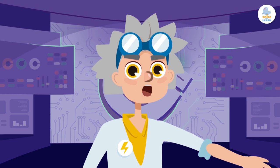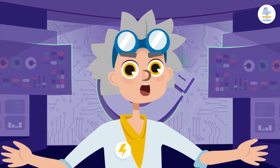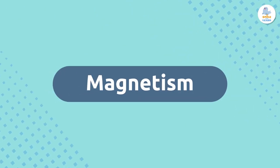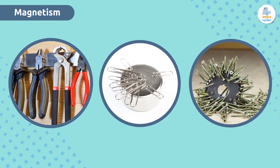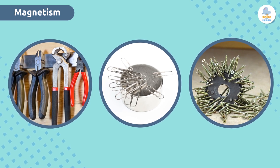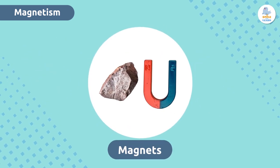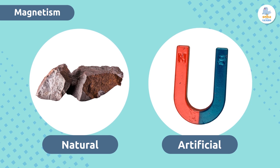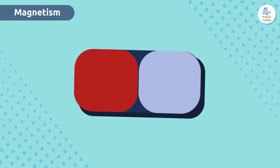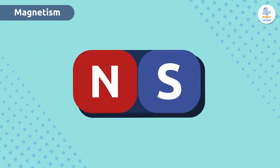Now that we have reviewed what electricity is, do you remember what magnetism is? Magnetism is a very interesting property that some objects have. It causes them to attract metallic elements like iron. These objects are called magnets. They can be natural or artificial and have two magnetic poles: the north pole and the south pole.